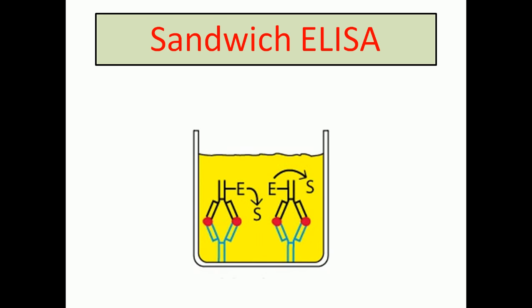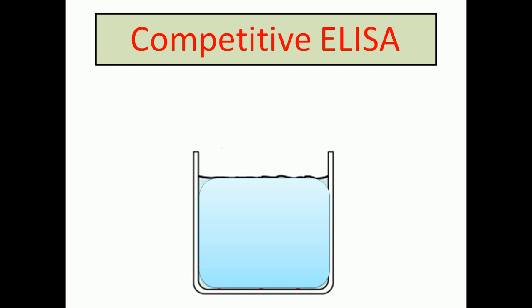Now let's look at the third type: competitive ELISA. This is slightly different — it's used when we don't know which particular antigen or antibody is causing a problem. We use competitive ELISA to figure out which antigen is causing more problems. In this case, we take the antibody from the patient. There can be an antigen-antibody complex, or sometimes only the antibody can be present without any antigen, as seen in both cases.